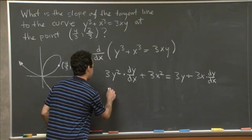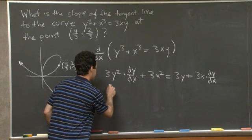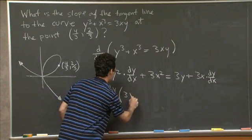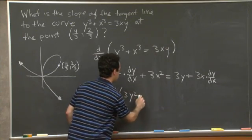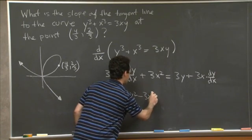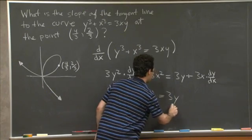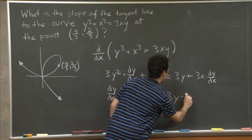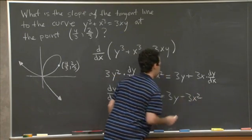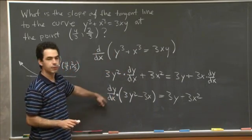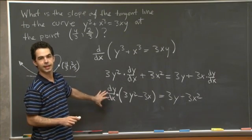So over here we get dy dx times (3y squared minus 3x). And on the other side, we have 3y minus 3x squared.